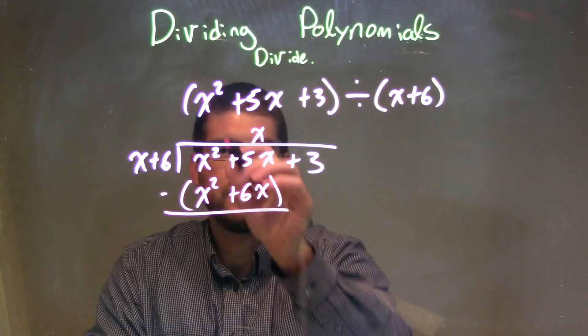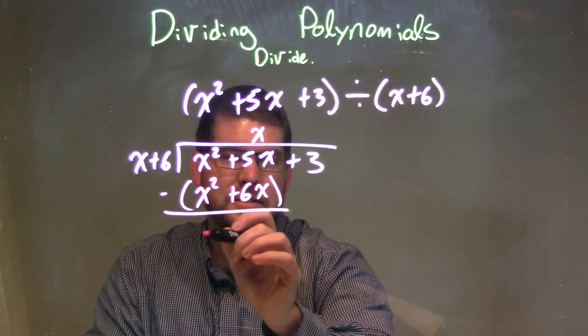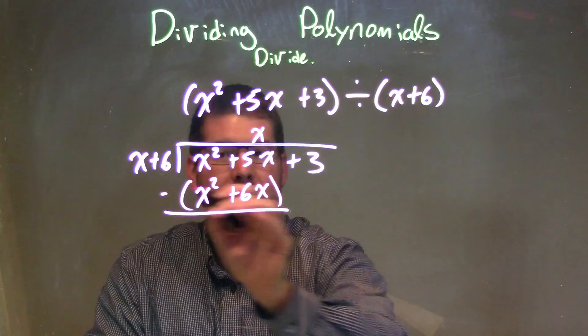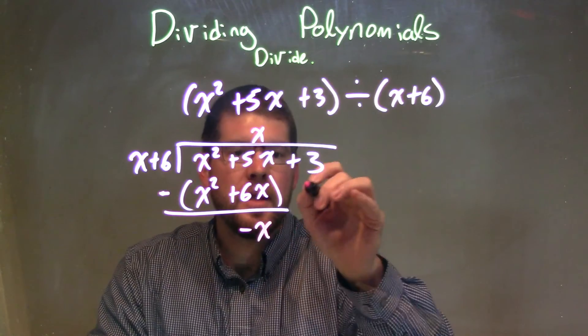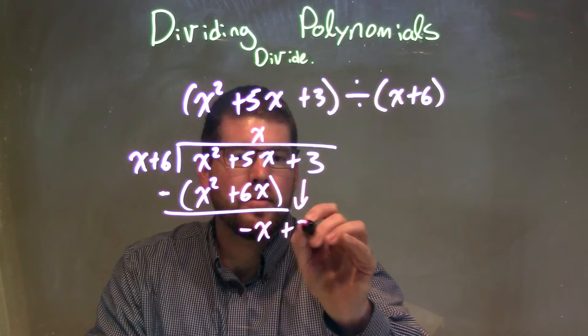We're now going to subtract the two straight down. x squared minus x squared is 0. Great. 5x minus, don't forget that minus sign, minus 6x is a minus x. Then we bring down the 3, the plus 3. Okay.